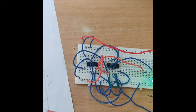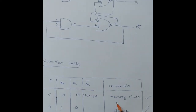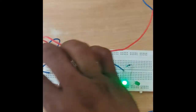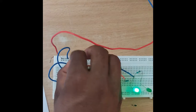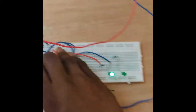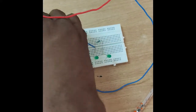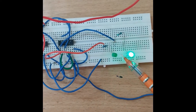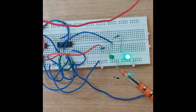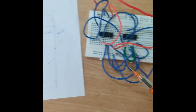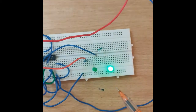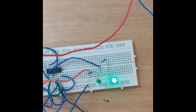Again we check the memory state with the 00 combination — that is why 00 is known as the memory state. Last combination: J is 1 and K is 1. The output changes — sometimes it is 0, sometimes it is 1. That is why the 11 combination is known as the toggle condition. Thank you all.